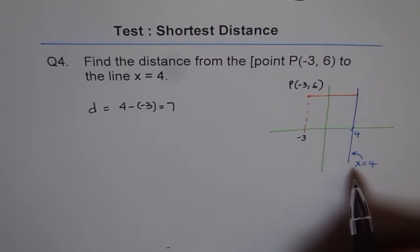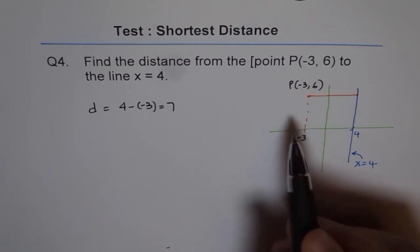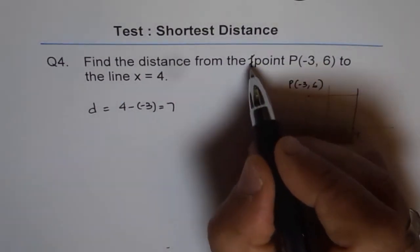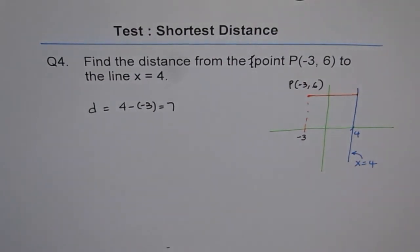And it is difference in values of y if the line is y equals 4. Depending on where the line is. So that's how we find the shortest distance from a point to a line, which is a vertical line in this case.